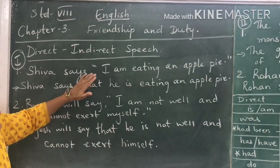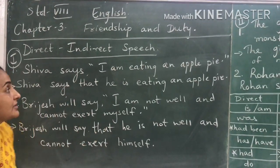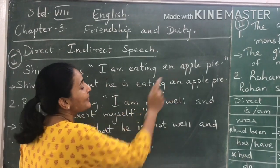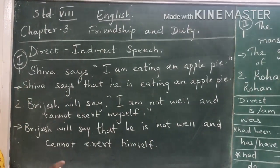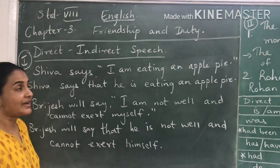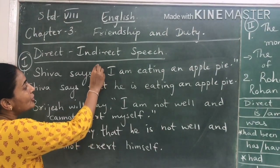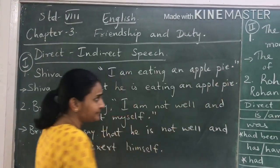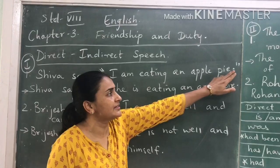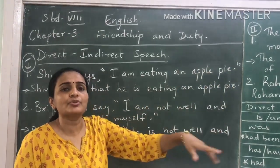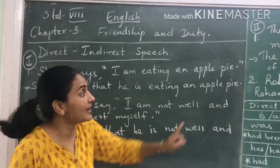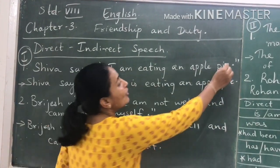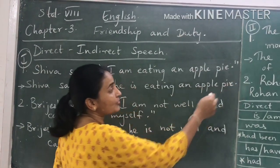I have written a few sentences over here to make your work clear. The first sentence: Shiva says, "I am eating an apple pie." First of all, whenever we write sentences of direct speech, we have to put a comma, then open inverted comma, then at the end of the sentence according to the sentence it can be a full stop, a question mark, or an exclamation mark, and then close inverted. It is never close inverted and then full stop or question mark.